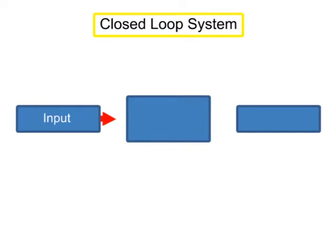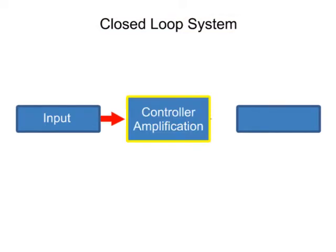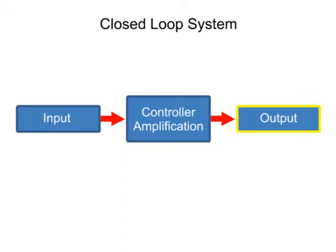In a closed-loop system, a controller is used to amplify the amount of output change in proportion to the change that occurs at the input.